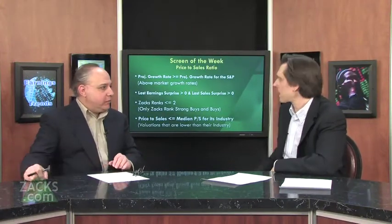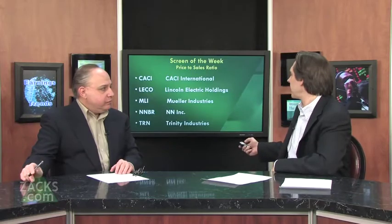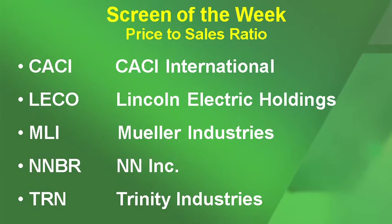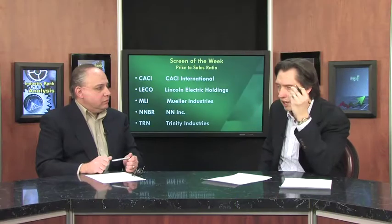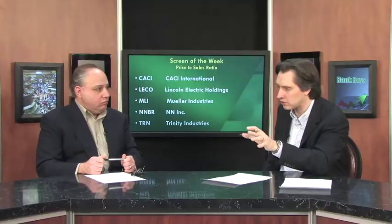Give us a couple of stocks that came through. There were about 50 to 60 stocks that made it through — here are five: Khaki International, Lincoln Electric, Mueller Industries, NN Incorporated, and Trinity Industries. All of these companies have outsized growth rates, they've surprised in the past, and they all have Price to Sales Ratios below the median for their industry. I think that is a critical thing.